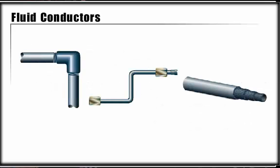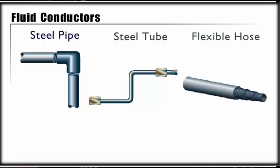Transmitting power from one location to another is a key element in system design and performance. Fluid conductors describe the different types of conducting lines that carry hydraulic fluid between components. The three principal types of plumbing materials used in hydraulic systems are steel pipes, steel tubing, and flexible hose.